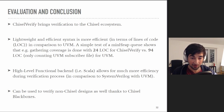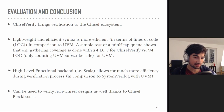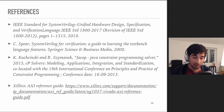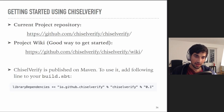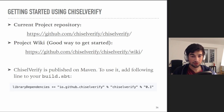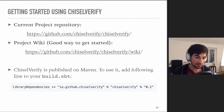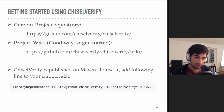ChiselVerify can also be used to verify non-Chisel designs, thanks to Chisel's blackboxing features. The project is fully open source and can be found on GitHub. The best way to get started is by checking out the detailed wiki, which contains an in-depth tutorial on the different functionalities proposed by the library. ChiselVerify is also published on Maven, so you can use it by adding a single line to your project's sbt file.